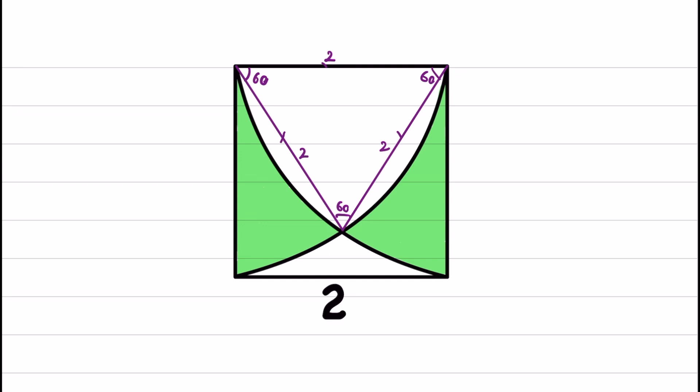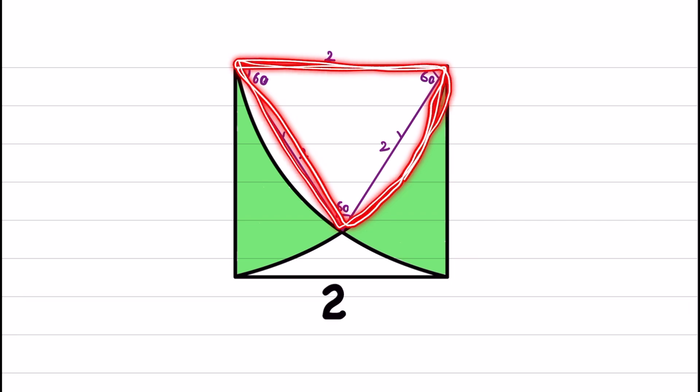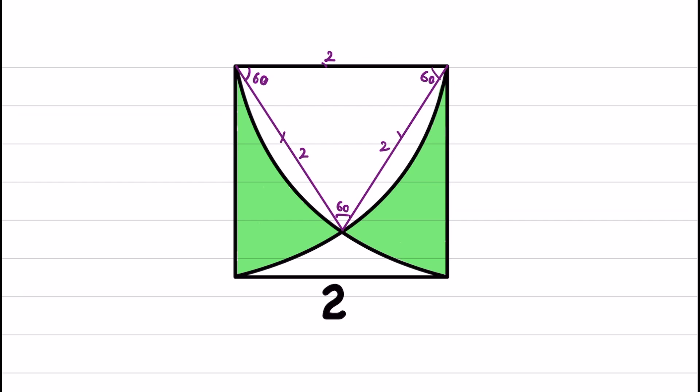Now, if you look at this part, this is a sector of a circle. Let me draw it here so you can see clearly. If we have a circle like this, the sector is something like this, where we have 60 degrees here.